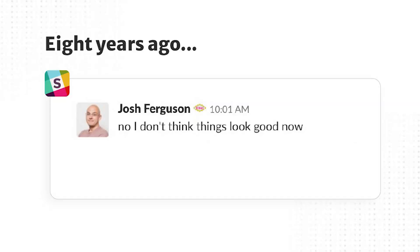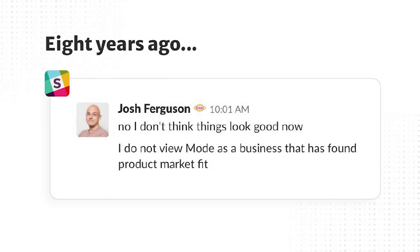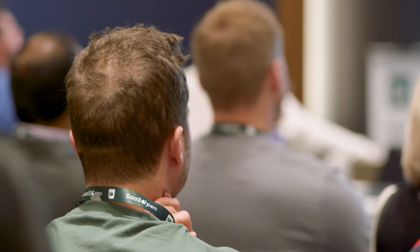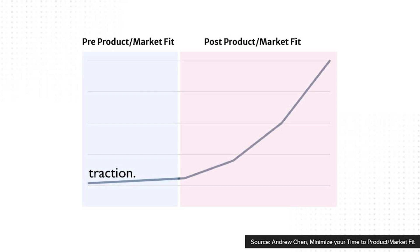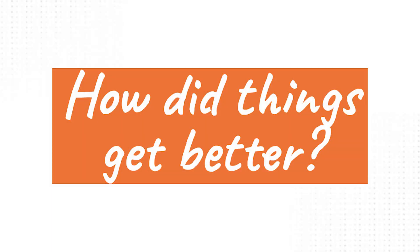This is actually a message from one of the other co-founders back when things weren't doing so great, saying he didn't think Mode had product market fit right now. This is a very basic graph of what product market fit is like: prior to product market fit, everything sucks; after product market fit, everything seems good. The question is how did things get better — what got us from the left side of that graph to the right side?